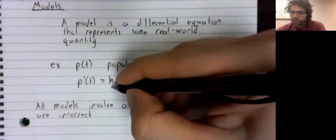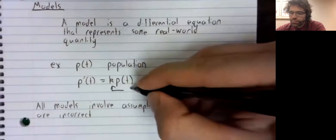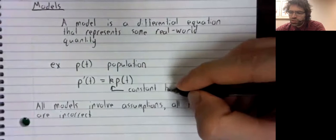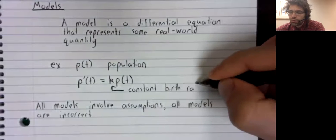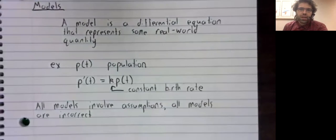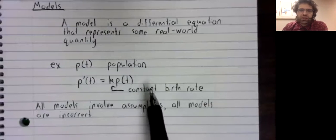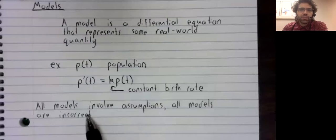This model carries with it the assumption that we have a constant birth rate. And of course, that assumption is never going to be quite correct. You can have birth rates that are fairly constant across fairly long time periods, but birth rates will fluctuate. So this is an assumption. And because this assumption is never quite true, it's going to make the model be not quite accurate.